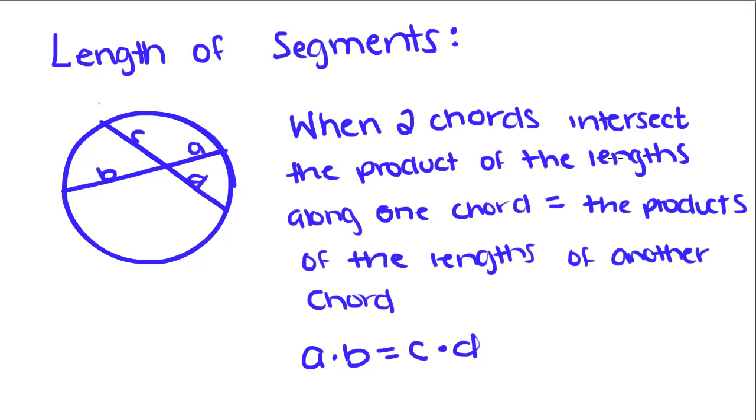Our focus today is on the length of segments in a circle. When two chords intersect, the product of the lengths—and a product is a fancy word for multiplication—along one chord is equal to the products of the lengths of another chord. If I have this chord right here and it intersects this chord right here, a times b is equal to c times d.